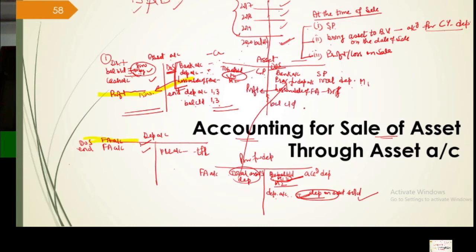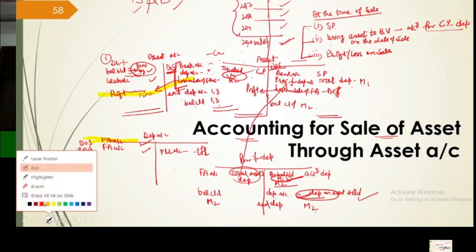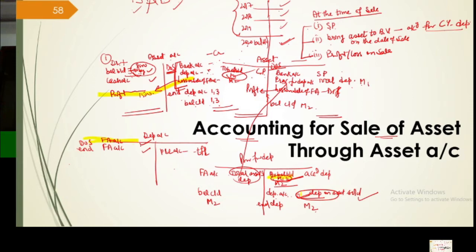After balancing, since M1 is gone, only M2's balance remains. At year-end, you charge depreciation on remaining assets only. The first machine's balance is already out. What remains is the second machine — its depreciation balance plus current year depreciation totals to give the closing balance. Cost of second machine also remains. First machine's entire cost and depreciation are all transferred out.